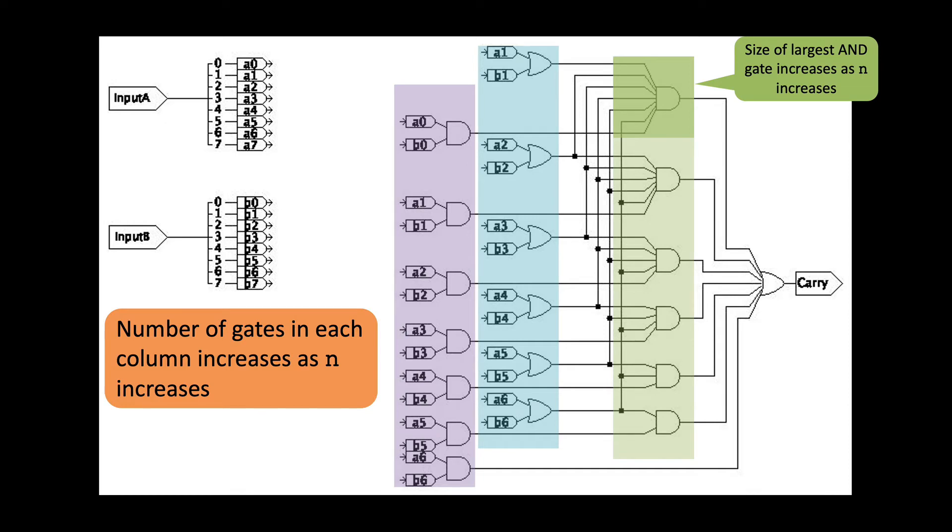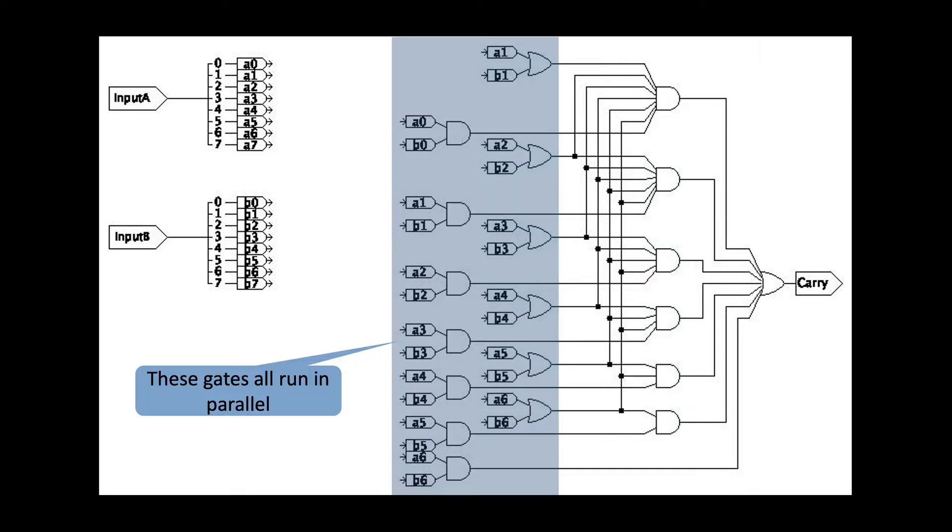First, notice that all of the generate and propagate gates run in parallel. They all just depend directly on the input A and B. Therefore, they contribute at most one gate delay or a big O of one, a constant amount of time. Next, all of these gates also run in parallel. They all depend solely on the generate and propagate gates.